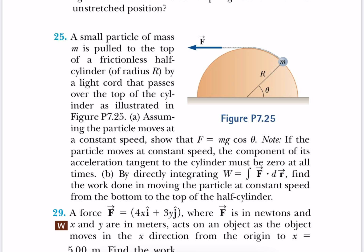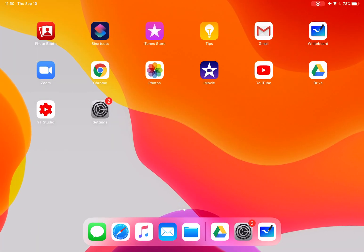Assuming the particle moves at constant speed — v is constant — we must show that F equals mg cosine theta. Note: if the particle moves at constant speed, the component of its acceleration tangent to the cylinder must be zero at all times. In part B, we have to find, by directly integrating, the work done in moving the particle at constant speed from the bottom to the top of the half cylinder. Now let me draw the picture.